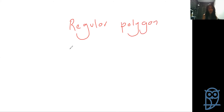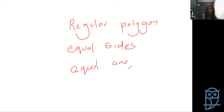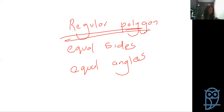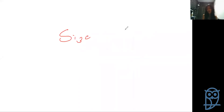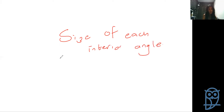A regular polygon has equal sides and equal angles. There is a general formula you can use when working out the size of the interior angles of a regular polygon - the size of each interior angle. Let's apply this using a pentagon as an example.